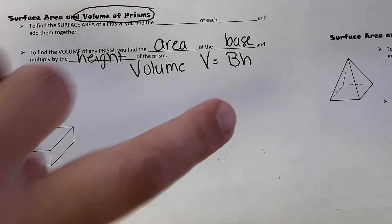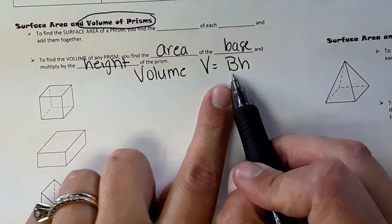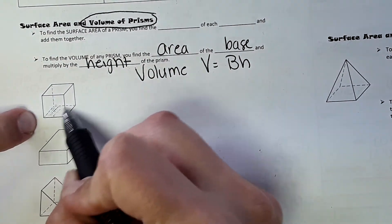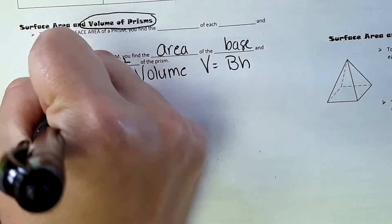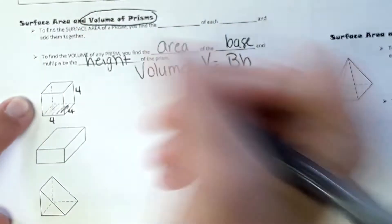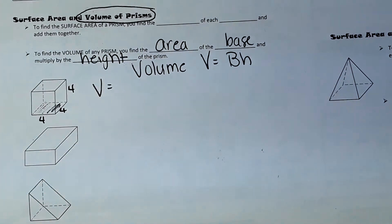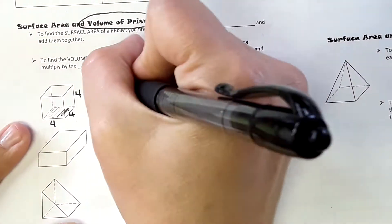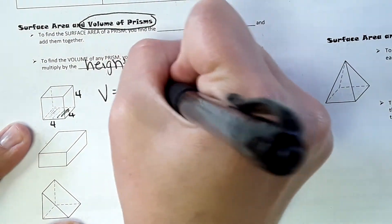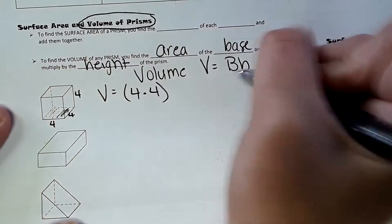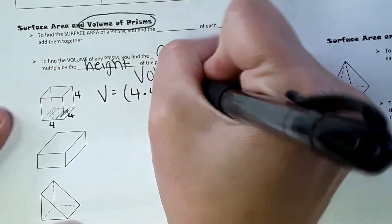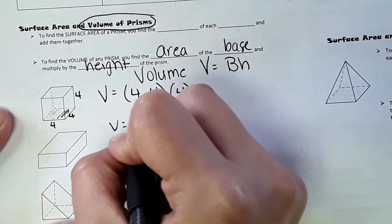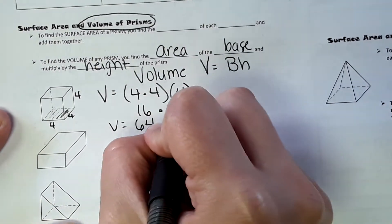For the volume of a rectangular prism with dimensions 4×4×4: the area of the base square is 4 × 4 = 16, and the height of the prism is 4. So Volume = 16 × 4 = 64 units cubed.